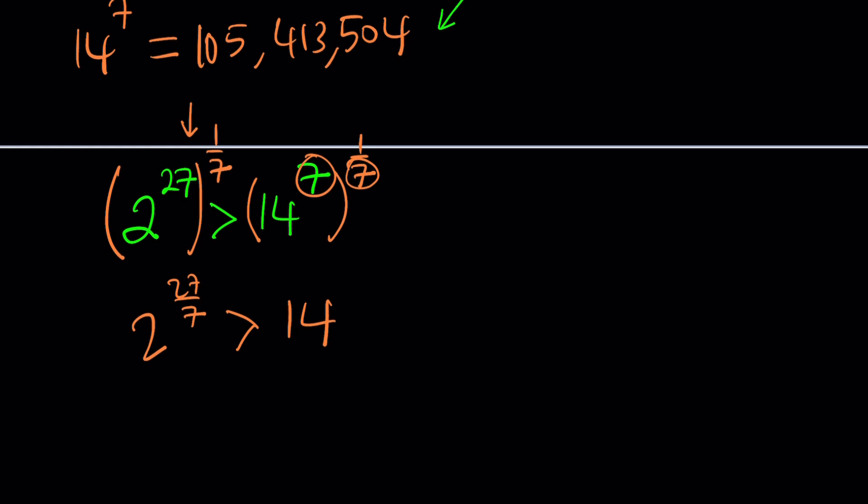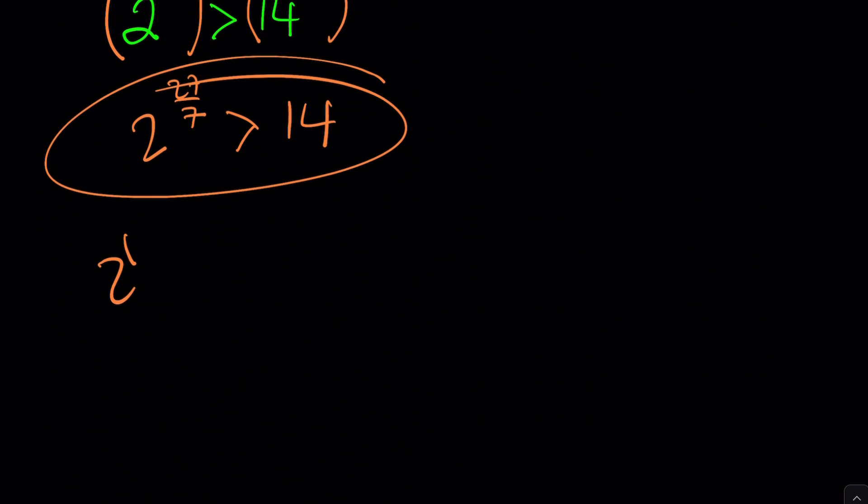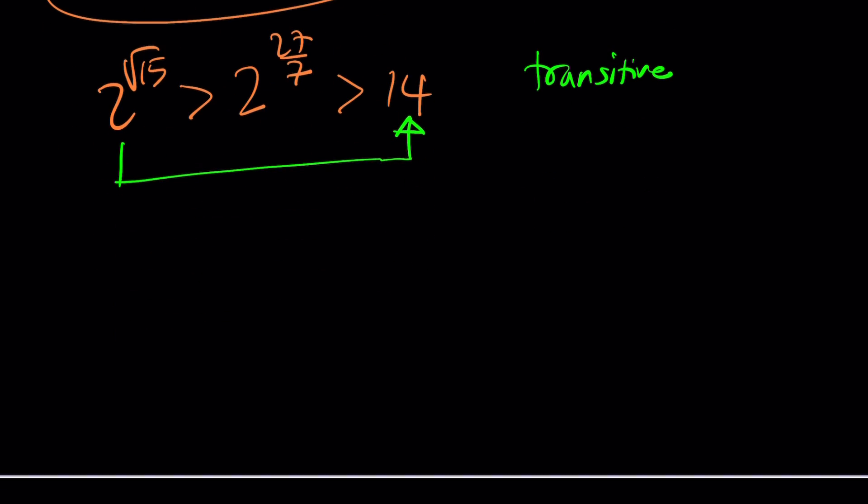And this is just awesome, don't you think? Well, let me tell you why this is awesome, because we already know that 2 to the power square root of 15 is greater than 2 to the power 27 over 7. And we also know that 2 to the power 27 over 7 is greater than 14 by transitive property, which is a property of relations or relationships. This is a relation, right?